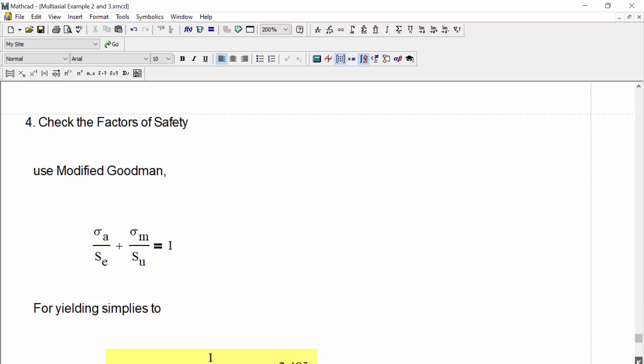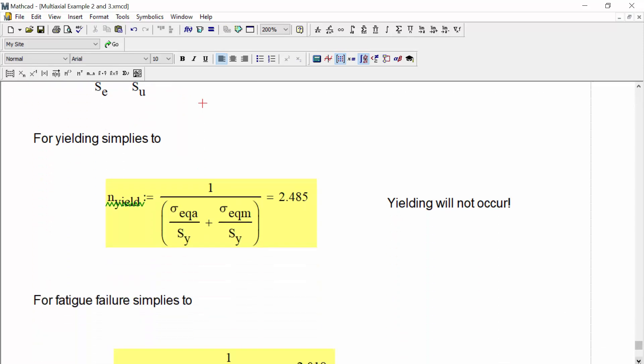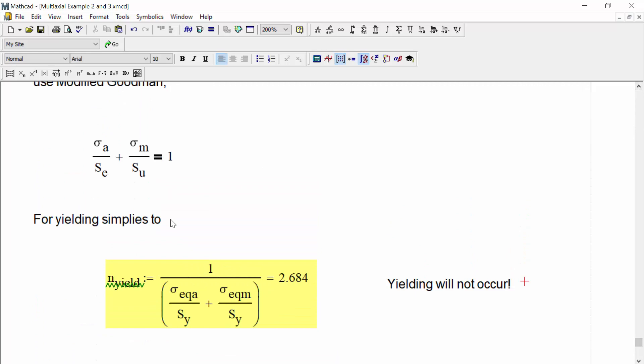Now we can jump into finding and checking those factors of safety. We'll be using modified Goodman, where the stress amplitude divided by the modified endurance limit plus the mean stress divided by the ultimate tensile strength should be equal to 1. If we want to add the factor of safety, we'll take that 1 and divide it by n, and then we can rearrange and solve for n. For yielding, our equations can rearrange and simplify as follows, where the safety factor for yielding is 1 divided by the von Mises' amplitude over the yield strength plus the von Mises' mean stress over the yield strength, giving us 2.485. Since n is greater than 1, yielding will not occur for this problem. And let's note here that for the yielding case, we replace SE and SU with SY.